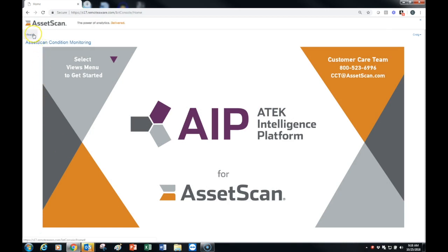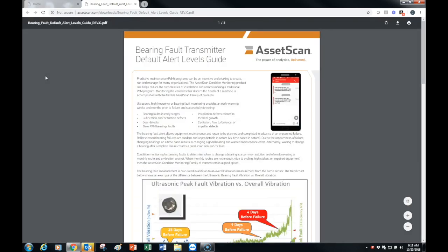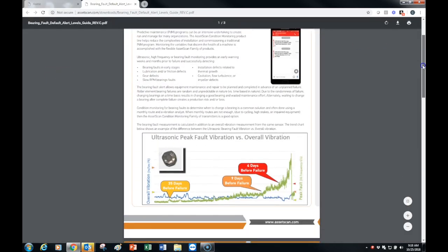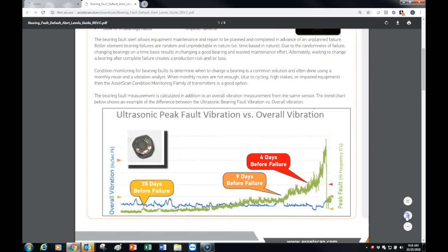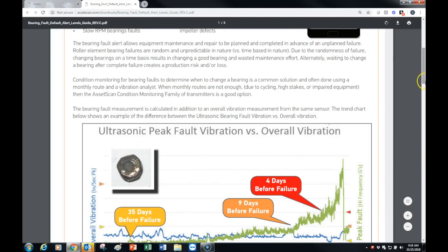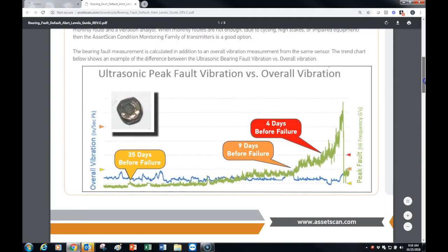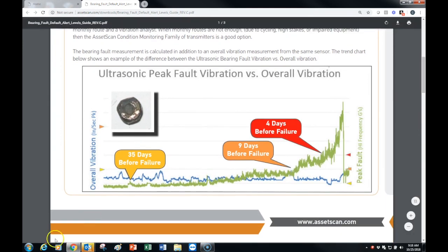So from your home page in AssetScan you can go up to views, come down to help with ultrasonic alerts, and in this white paper there is an example of a failure progression from healthy bearing to complete failure, showing the trend lines for both overall and ultrasonic.